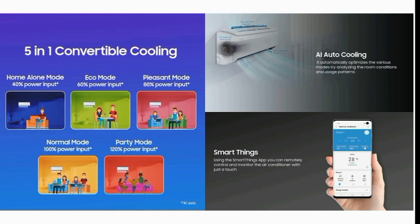The second option is ECO. If you choose the ECO option, you can use the same cooling. The ASE runs at 60% and the remaining 40% is saving.